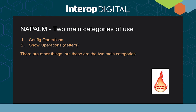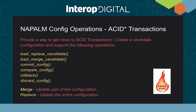NAPALM has two main categories of use: configuration operations and information operations, also called getters. For configuration, NAPALM tries to achieve ACID-like transactions. For all core platforms it creates a candidate config — artificially for platforms like Cisco IOS and NX-OS that don't have a true candidate config, using a file on the filesystem. Methods available include: replace_candidate_config for a full configuration replace, merge_candidate for a partial configuration, commit_config to apply the candidate to running and startup config, compare_config to get a diff, and discard_config to drop pending changes.